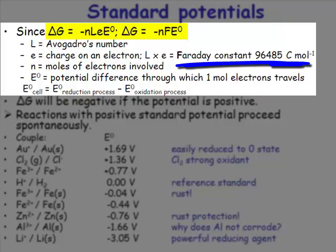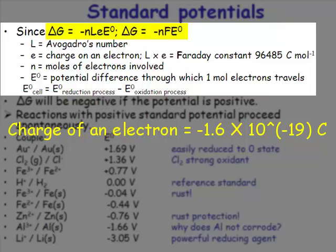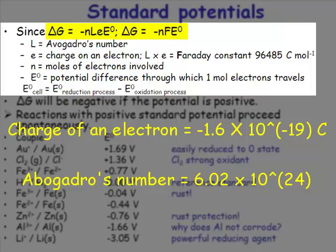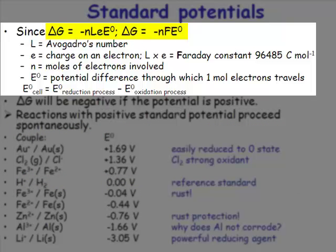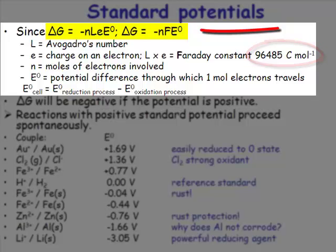There is another constant in chemistry — Faraday's constant — obtained by multiplying the charge on an electron, about minus 1.6 times 10 to the minus 19 Coulombs, by Avogadro's number, 6.02 times 10 to the 23. Those are both very large and very small numbers, but multiplied together you get a manageable value: 96,485 Coulombs per mole. That is Faraday's constant.